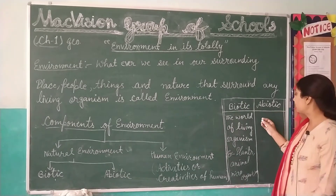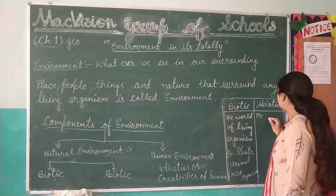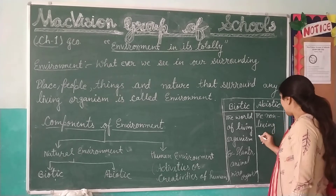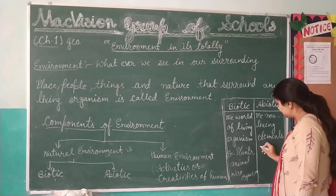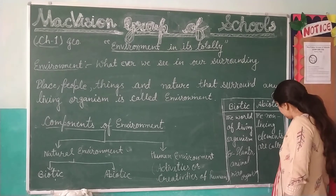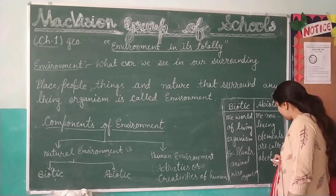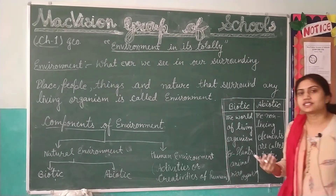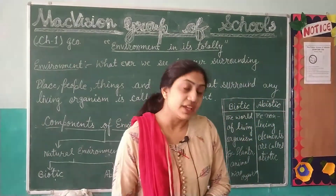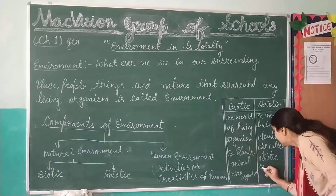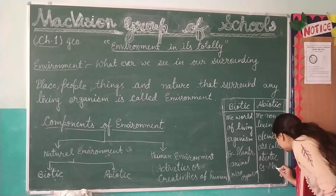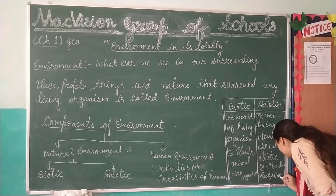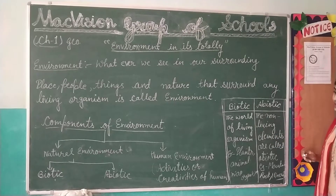Abiotic components are the non-living elements. The non-living components are called abiotic components. For example, mountains, rocks, and minerals are abiotic components.